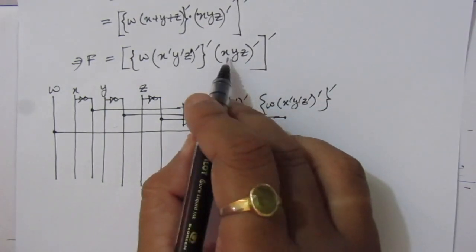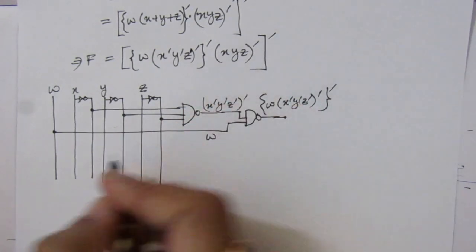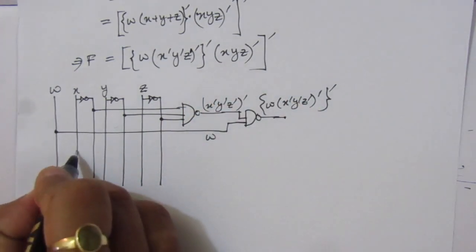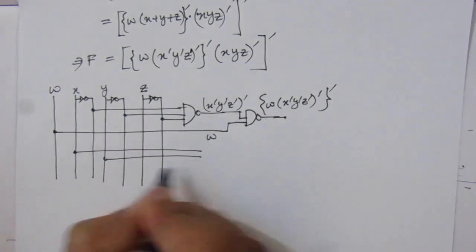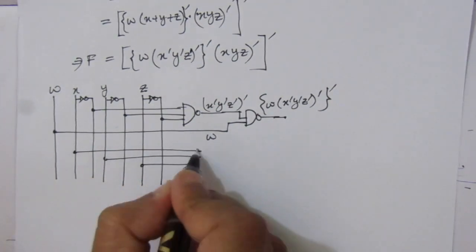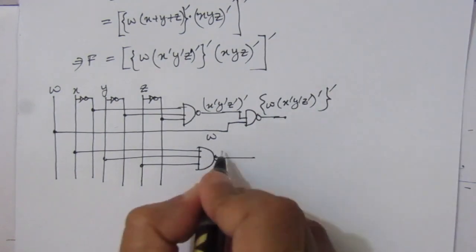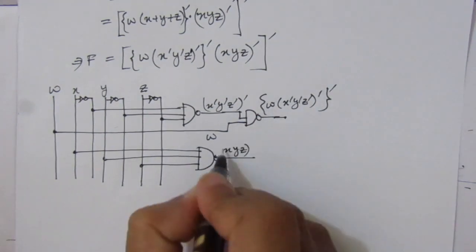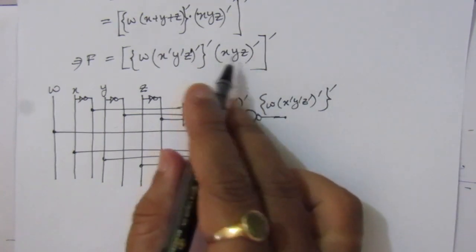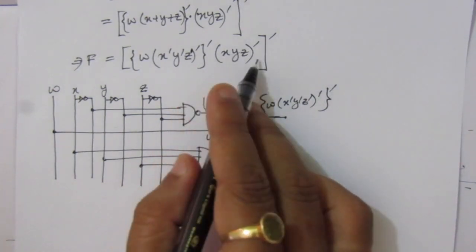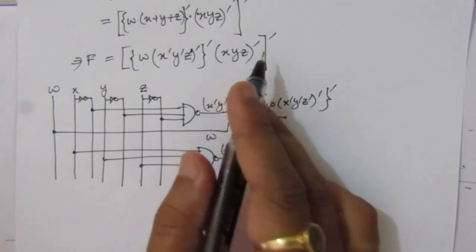Then we have the term xyz whole bar, which we can find by connecting inputs x, y, and z to a NAND gate. The output gives us (x · y · z) whole bar. This is nothing but a NAND operation — we multiply the inputs and then invert — so it is a NAND gate.